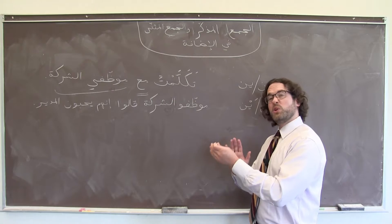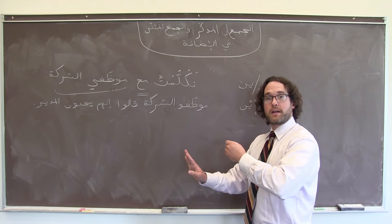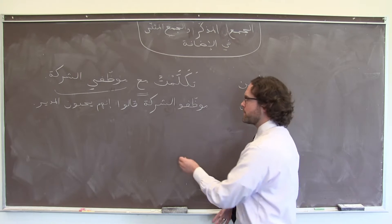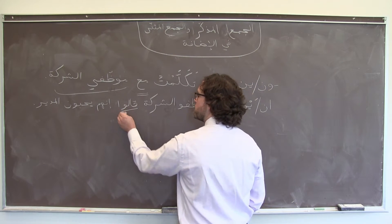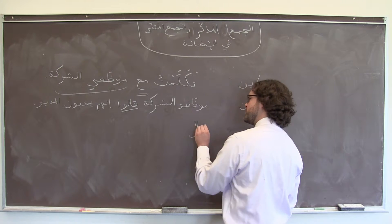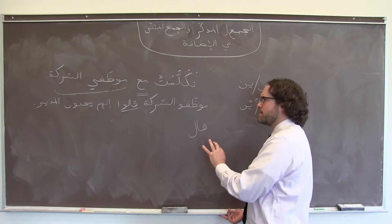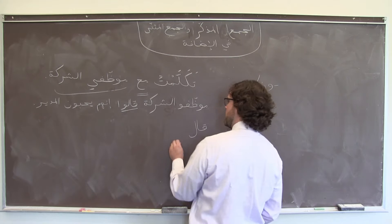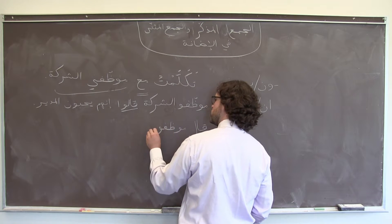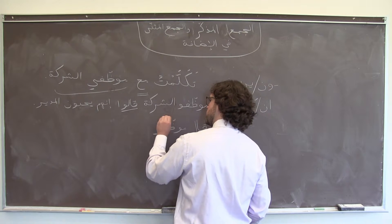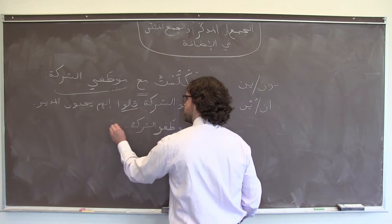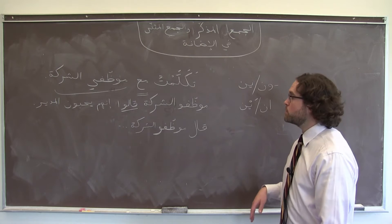Now, we could make this a جملة فعلية — in fact, we could argue that it would be more elegant, more Arabic style that way. In which case we would put the verb first, and because the verb comes first and we haven't mentioned the subject yet, it would be singular: قال موظفو الشركة, et cetera. Either way would be fine.